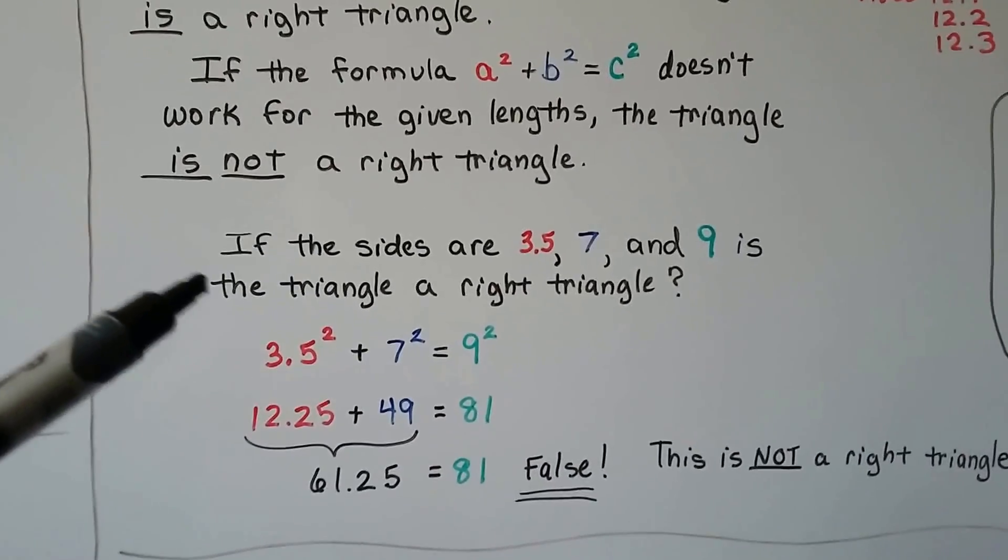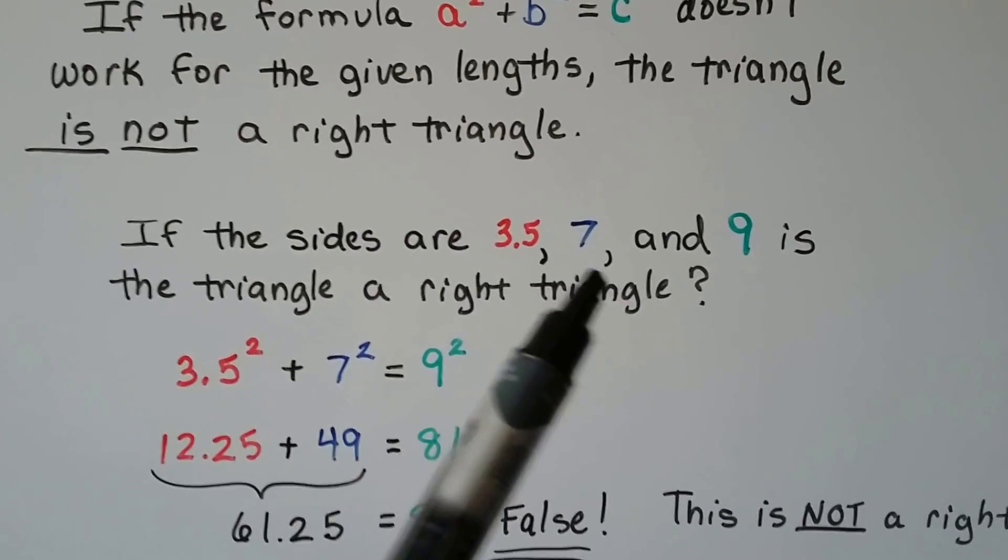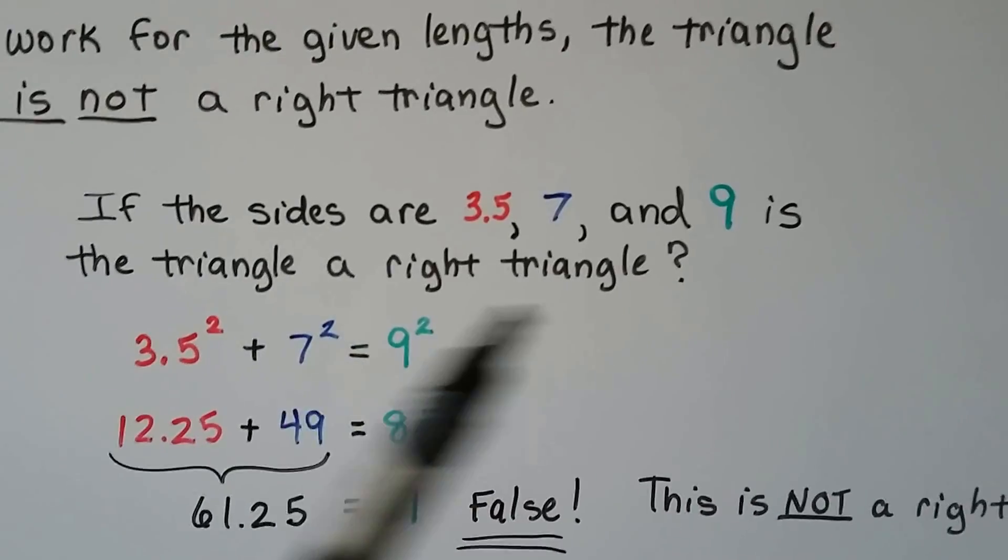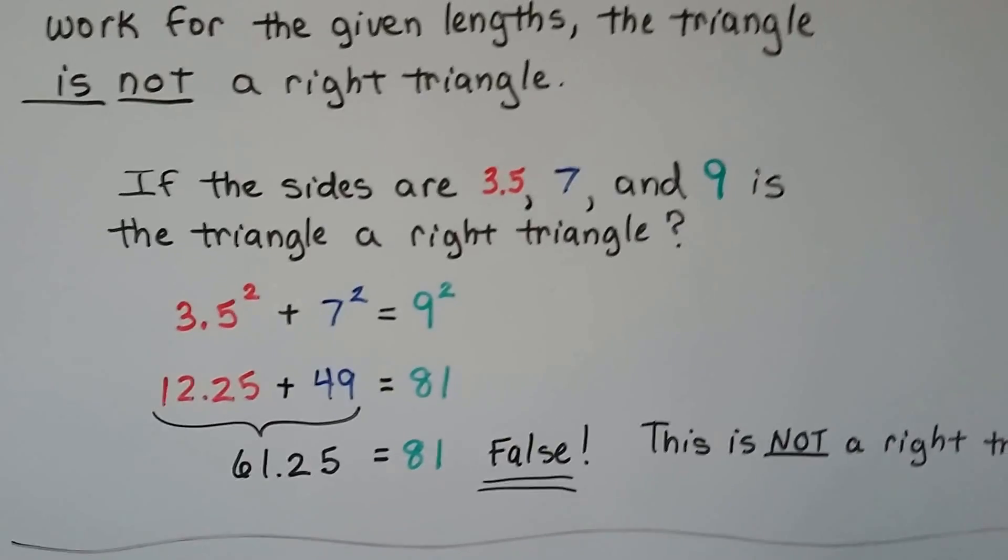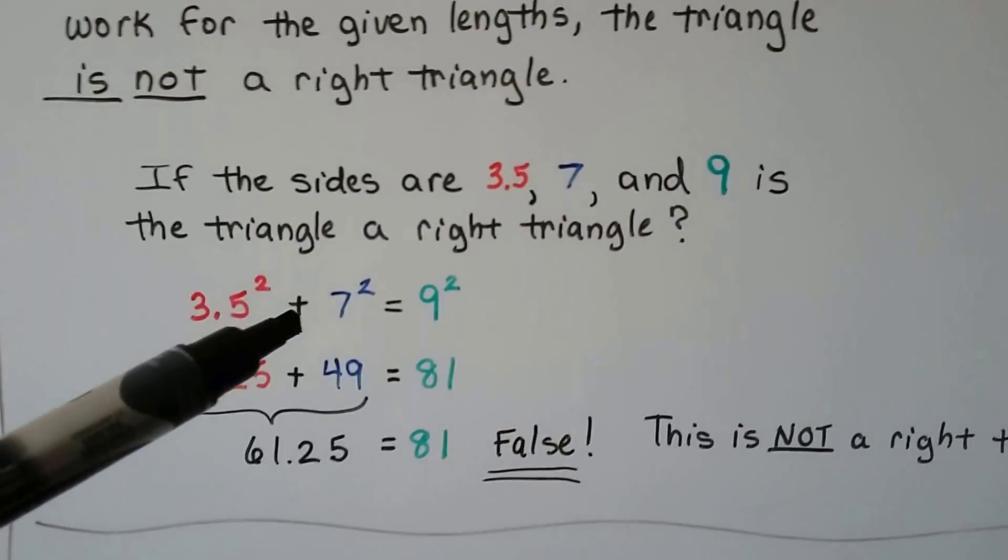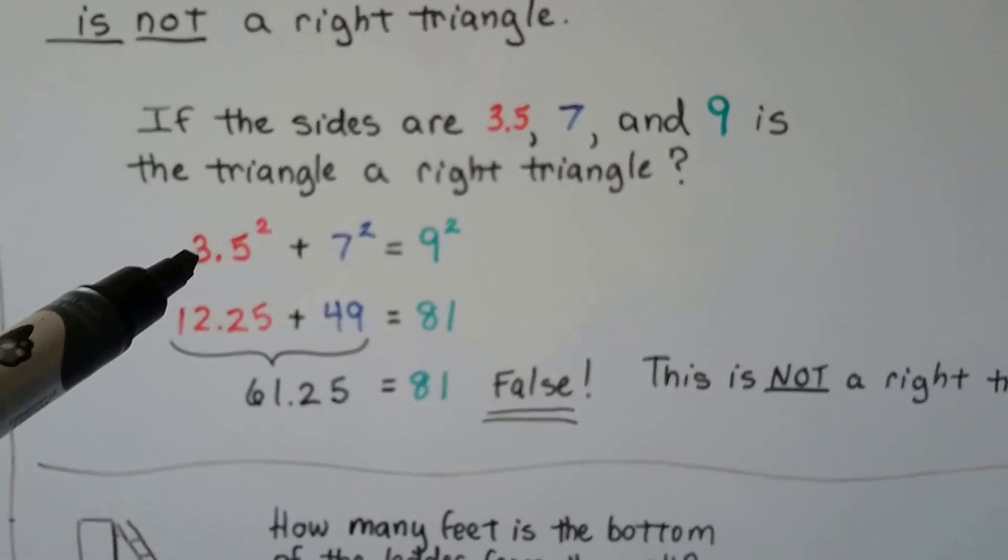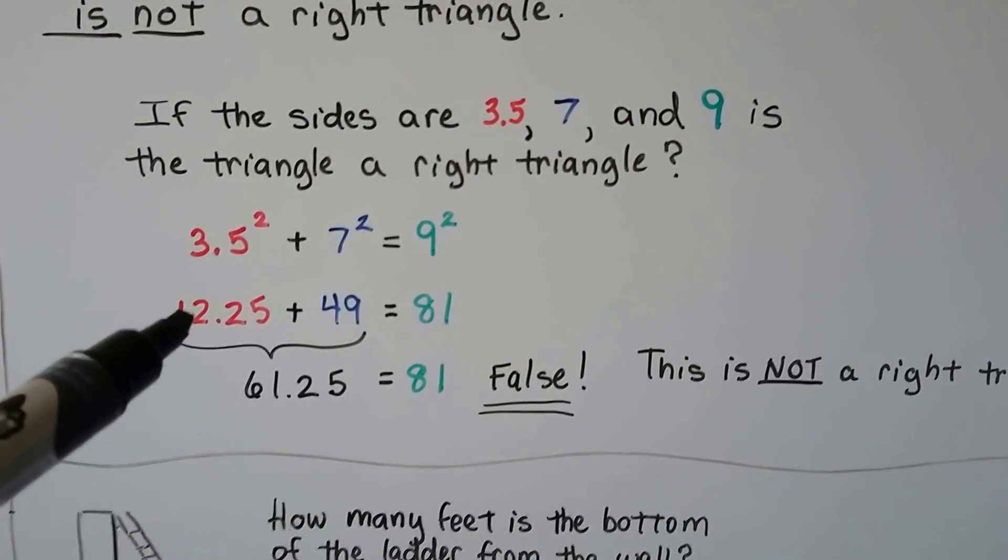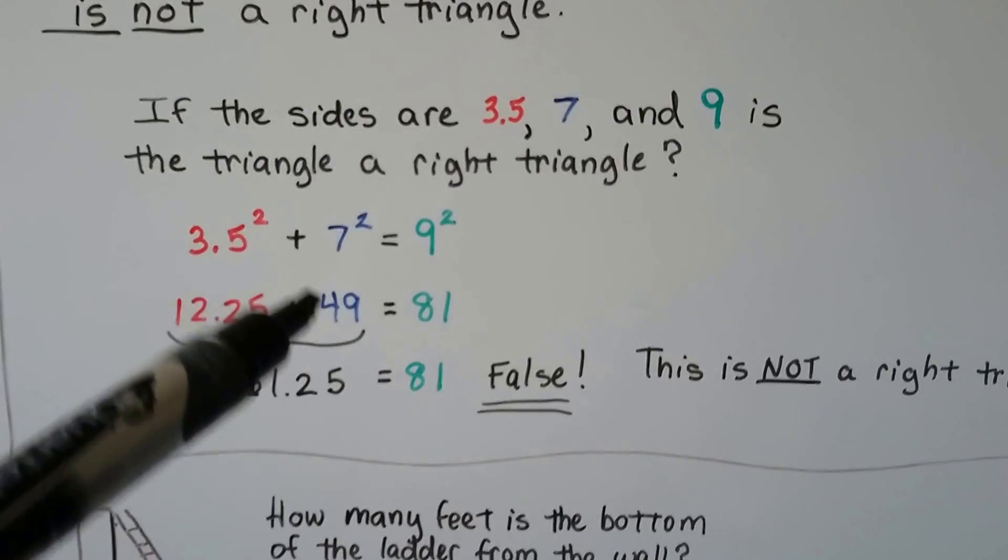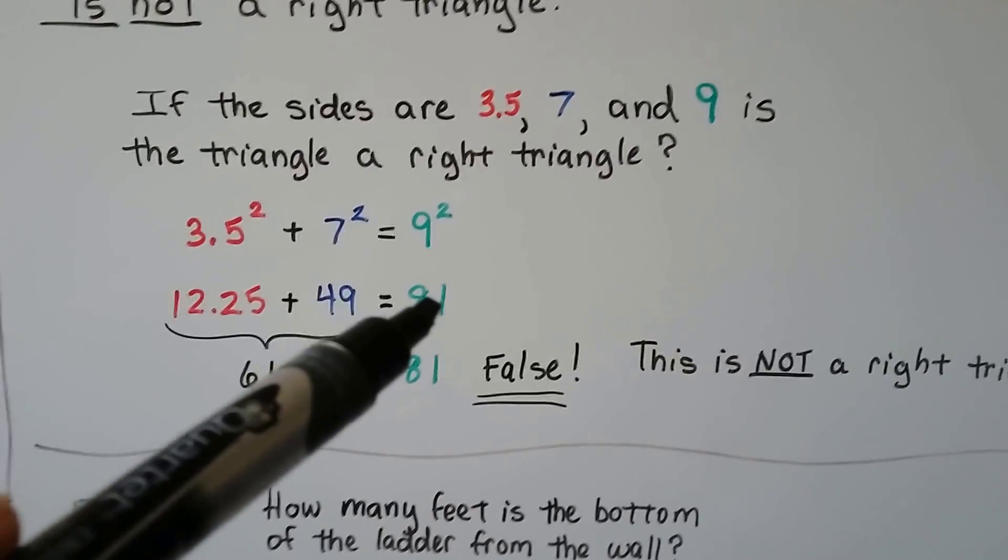So, if we had a triangle with the sides 3.5, 7, and 9, would that triangle be a right triangle? Well, let's try it. 3.5 squared plus 7 squared equals 9 squared. 3.5 times 3.5 is 12.25, 7 times 7 is 49, and 9 times 9 is 81.